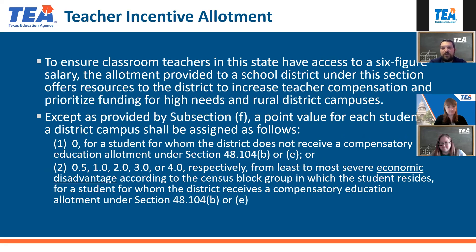The Teacher Incentive Allotment is a relatively new allotment passed in the 86th session under House Bill 3. The goal is to provide teachers access to a six-figure salary, and it offers resources to the district to increase teacher compensation, prioritizing funding for high-needs and rural district campuses. Based on a weight determined by the student's economic status and their census block group, from least to most severe economic disadvantage — for a student for whom the district receives compensatory education allotment funds under 48.104B or E — that will also determine the weight of the teacher incentive allotment your district may receive.